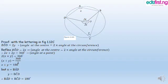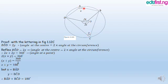In figure 1.12c, angle BOD equals 2Y — the angle at the center is equal to 2 times the angle at the circumference. This angle here equals 2 times this angle here. Likewise, this angle here equals 2 times this angle here. Reflex BOD equals 2X. The remaining angle after 2Y is 2X. It is also the case that the angle at the center is equal to 2 times the angle at the circumference.